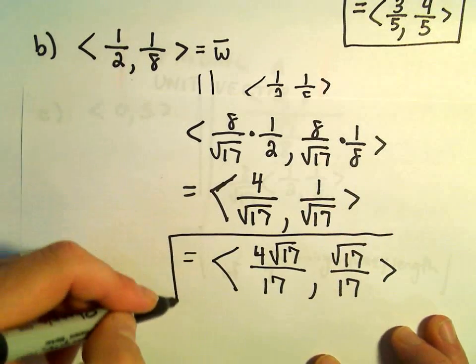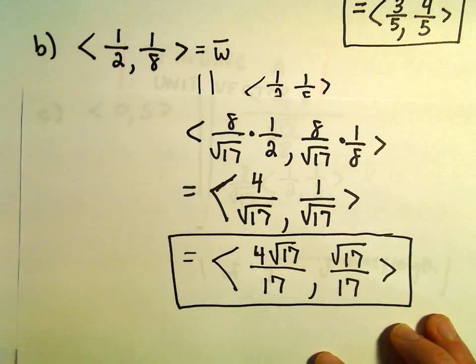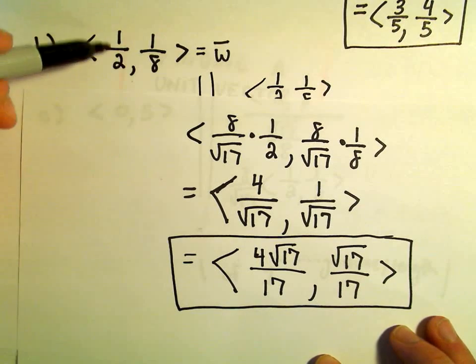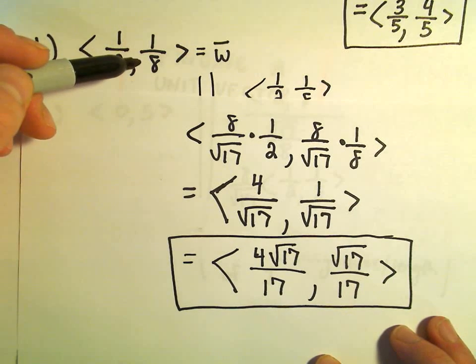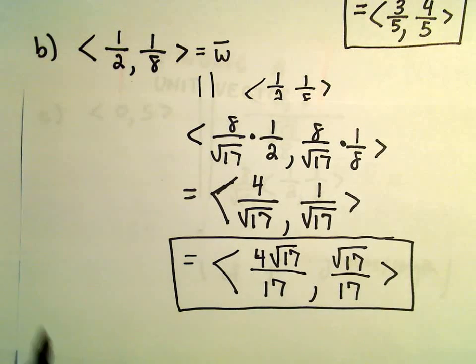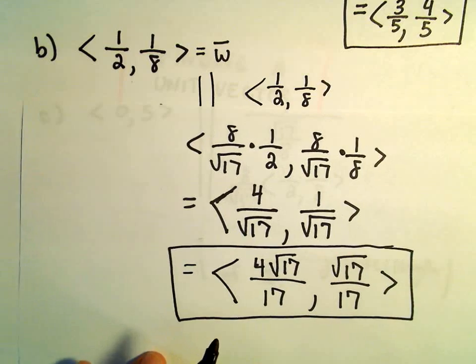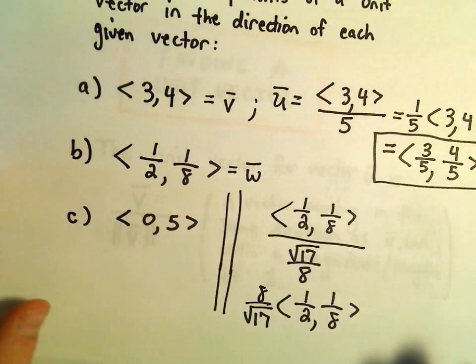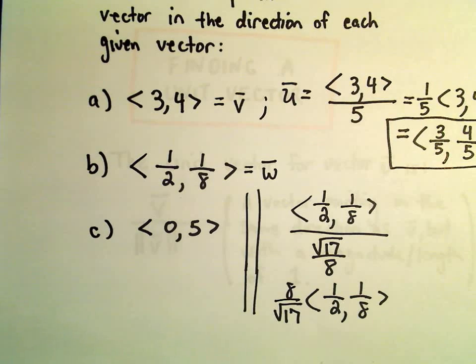Okay, so to me, that would be the unit vector for our vector with components 1 half, comma, 1 eighth. So, let's do our very last one here as well, the one that has components 0 and 5. That one doesn't look too terrible at all.